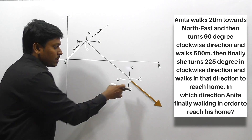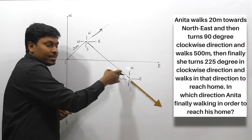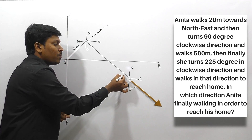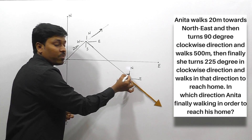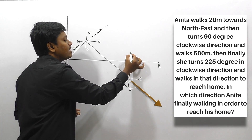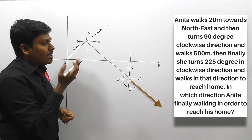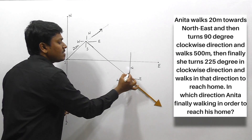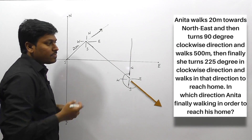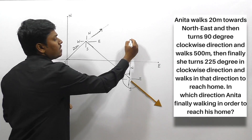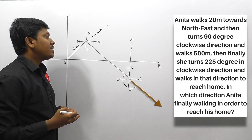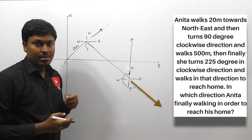Now we can say that Anita is facing this direction — draw a small dotted line. After this she is turning 225 degrees in clockwise direction — clockwise direction is this side. From here, turning 225 degrees clockwise: this will be 180 degrees, so 180 plus 45 equals 225 degrees. Finally Anita will be facing this direction and she walks to reach her home. We can say that Anita is finally walking in north direction to reach her home. The answer for this question is north.